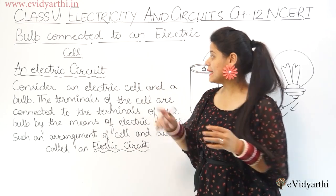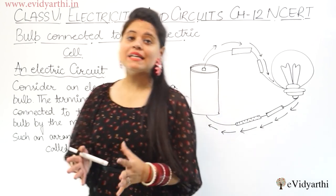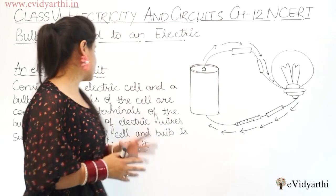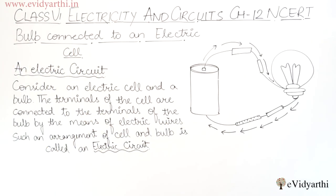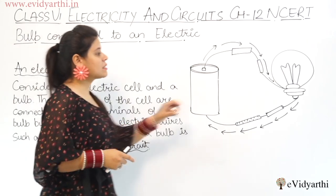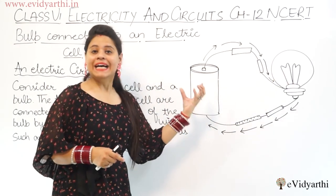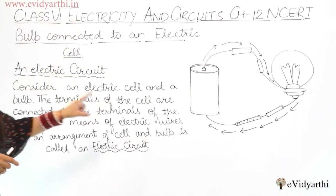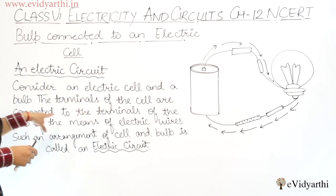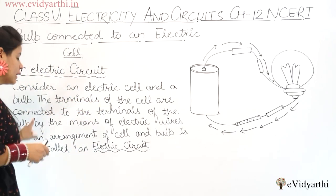Now, let's go to the electric circuit. What is an electric circuit? Consider an electric cell and a bulb. You can see here, this is a bulb and it is an electric cell. The terminals of the cell are connected to the terminals of the bulb.